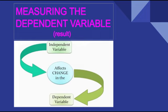Measuring the dependent variable — the results. Scientists must decide how they will measure the dependent variable, the one that changes because of the change in the independent variable. The dependent variable can often be measured in different ways. For example, if the dependent variable is fish health, scientists could measure the fish's size, their weight, or their number of offspring.